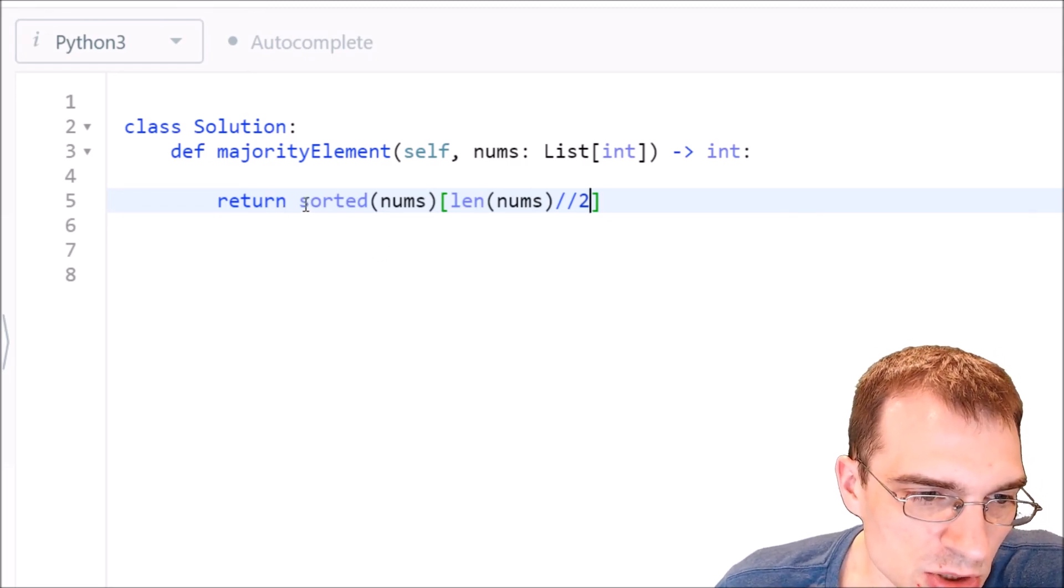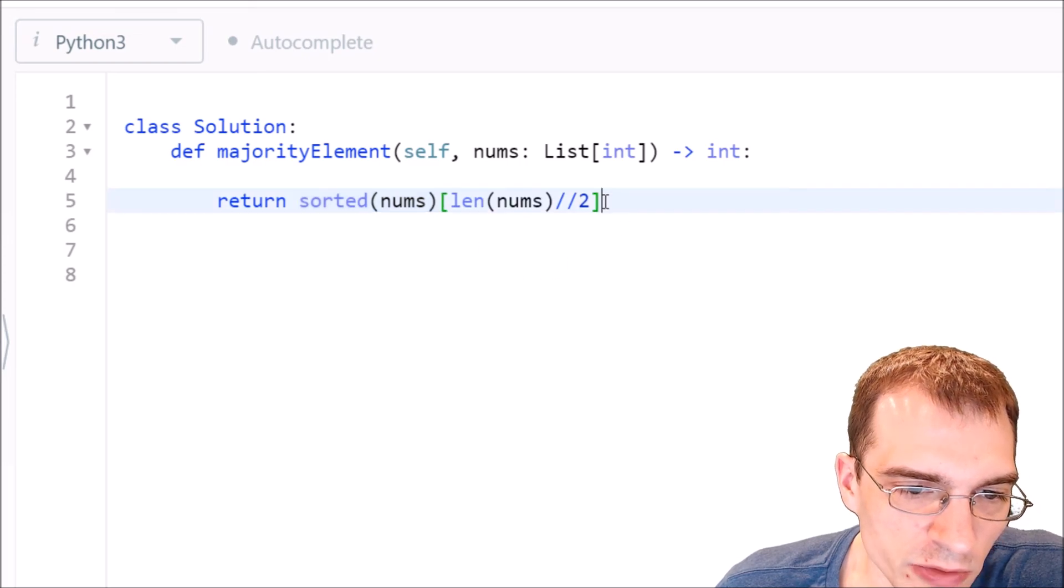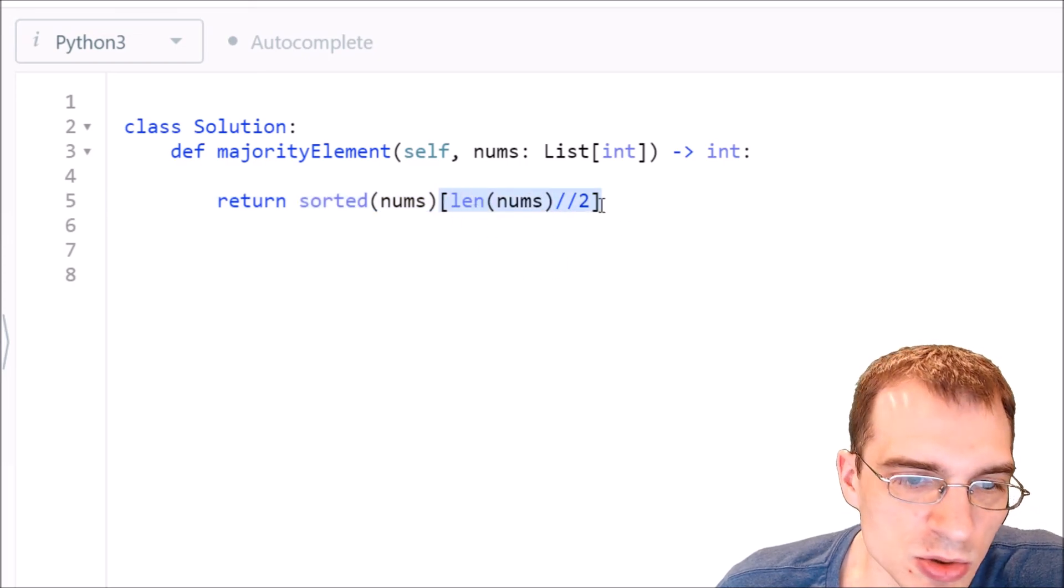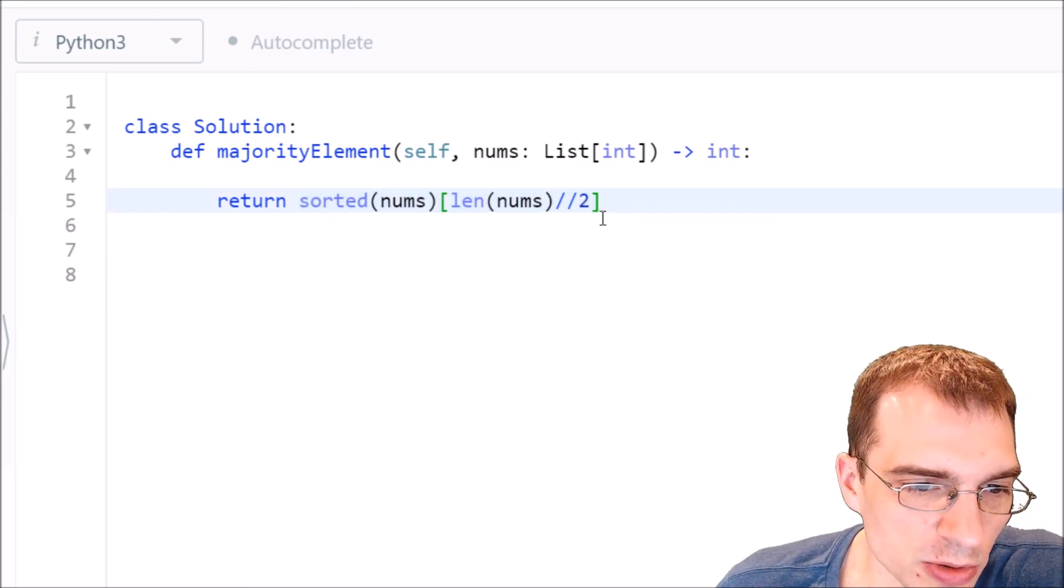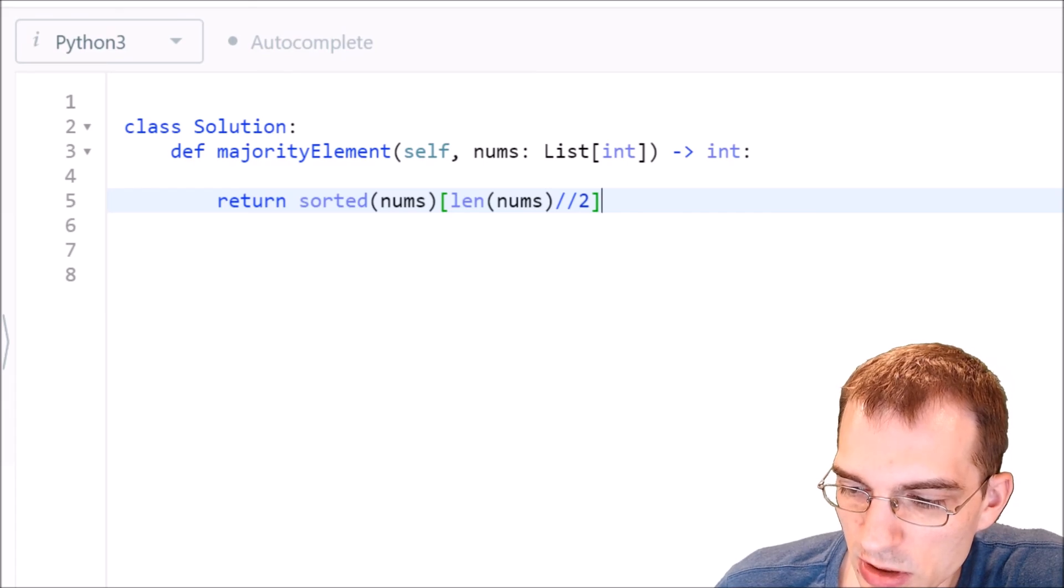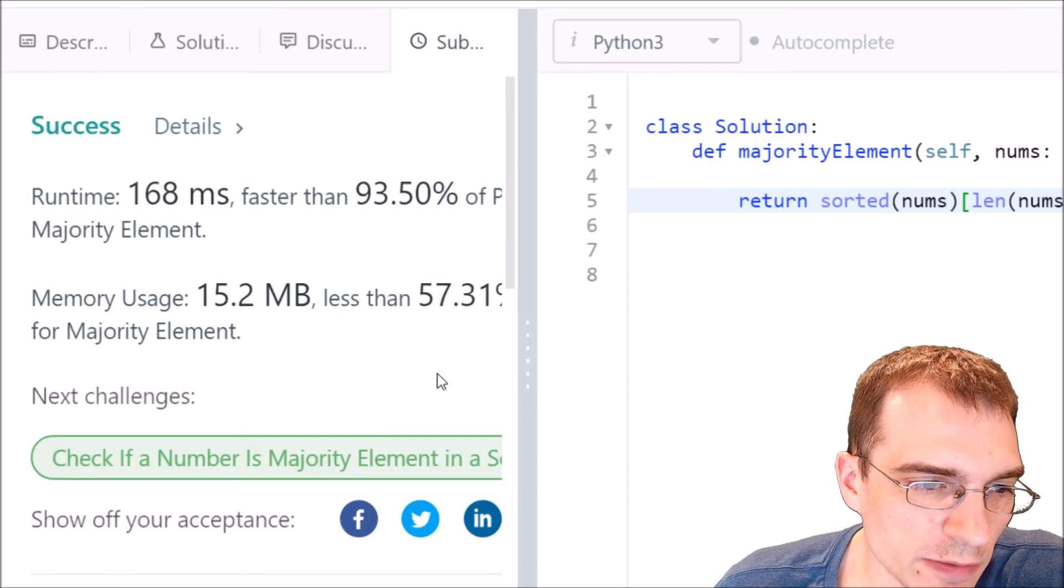So floor divide rounds down to an integer where we can actually have an index guaranteed. So basically we're just sorting it, then taking whatever element is at the middle after it's sorted. And this is only one line, but it should actually give us the proper result here. So let's submit this one as well and see what we got for this one.